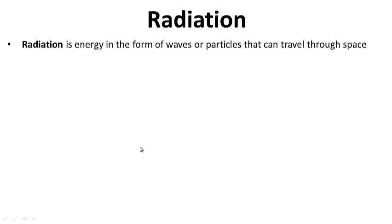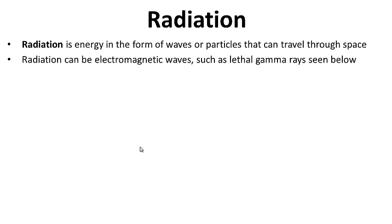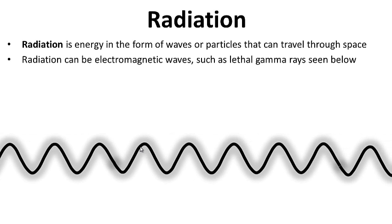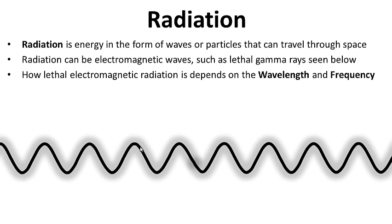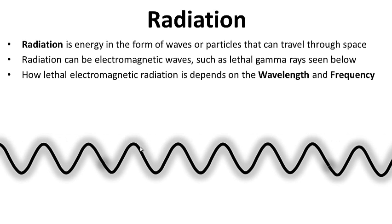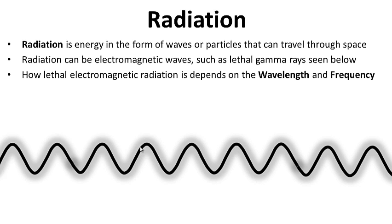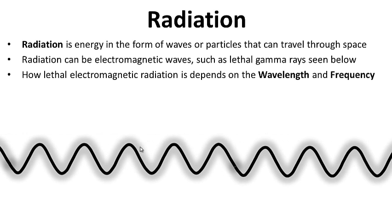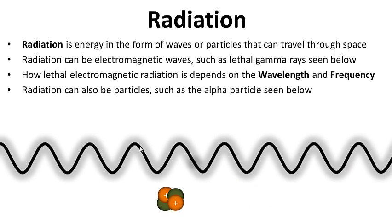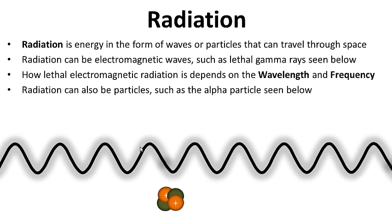Radiation is an energy in the form of waves or particles that can travel through space. Radiation can be electromagnetic waves such as lethal gamma rays. How lethal electromagnetic radiation is depends on the wavelength and frequency. Radiation can also be particles such as the alpha particles seen below.